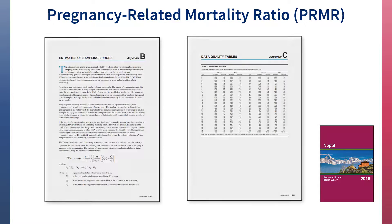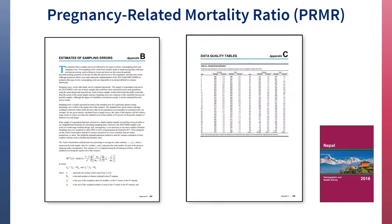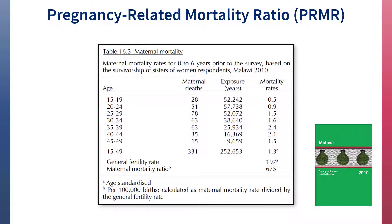In addition, tables on pregnancy-related mortality can be found in the appendices, estimates of sampling errors, and data quality tables. In reports from DHS surveys conducted before 2016, the pregnancy-related mortality ratio was called the maternal mortality ratio, even though the indicator measured what DHS now calls pregnancy-related mortality.